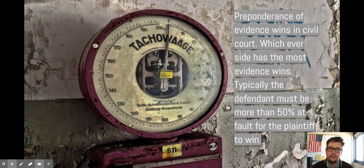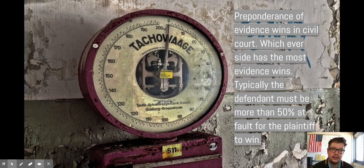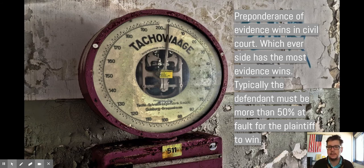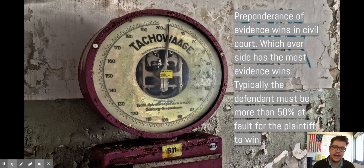For example, someone brings a lawsuit against a car company claiming the car company is at fault for their injuries, but the evidence shows the person driving was speeding, not wearing a seatbelt, and was under the influence. That's going to be much more evidence for the defendant. So even if the car is 20% at fault, that's not enough for the plaintiff to win. The defendant has to be more than half at fault for the plaintiff to win damages.